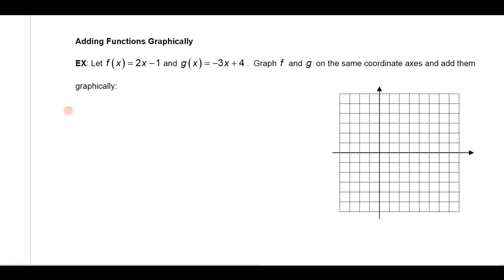Now I could of course add these just algebraically. I could look at the function f plus g of x which is f of x plus g of x. And f of x is 2x minus 1 plus the g of x is negative 3x plus 4.